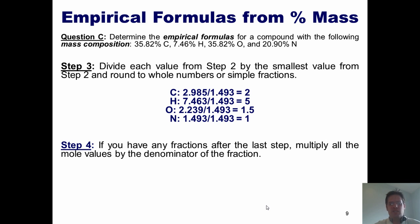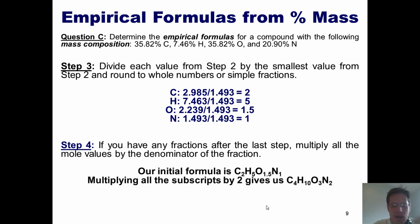Step four is if we have any fractions or decimals after step three. We multiply them all by whatever we need to to convert them into nice neat whole numbers. So up to this point, our formula is C2, and this two has come from up here. H5, and this five has come from up here. O1.5, which came from here, and N1. Now you note that it's absolutely ridiculous to have a formula where you have O1.5. So what in the world can we do to fix that?